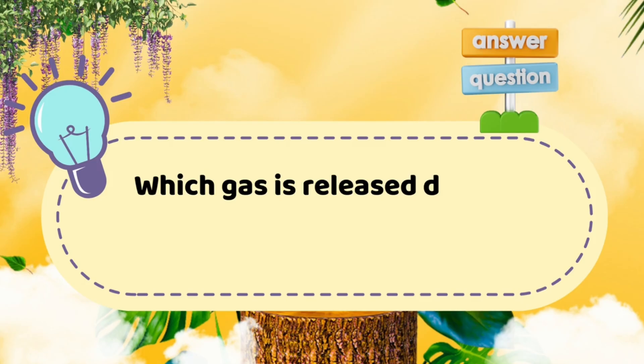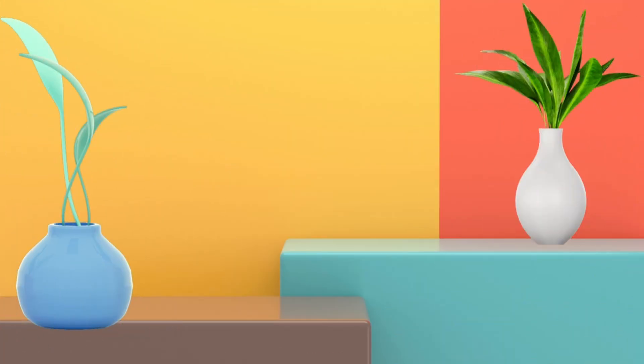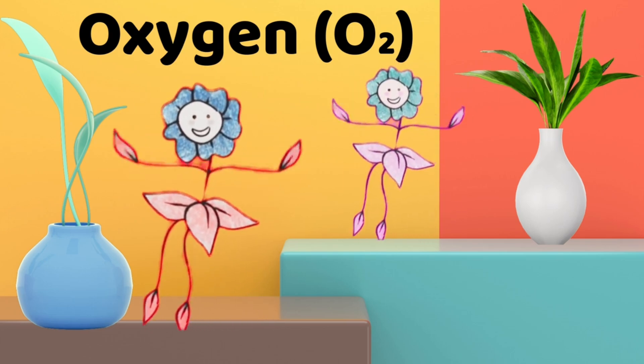Question eight: Which gas is released during photosynthesis? Answer: oxygen, O2. Superb, you got the fresh air maker right.